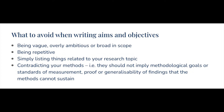Things to avoid when writing your aims and objectives include being vague, overly ambitious, or too broad in scope. Avoid being repetitive, or simply listing things related to your research topic without really thinking it through. Make sure you've really thought it through and it makes sense.